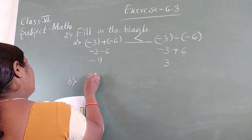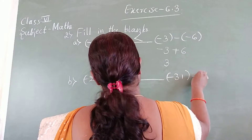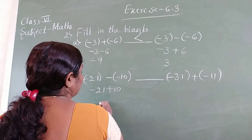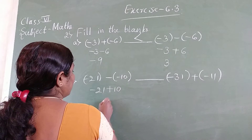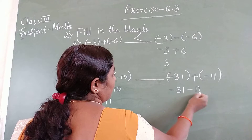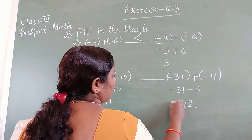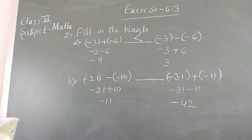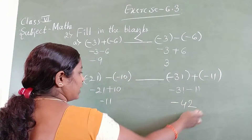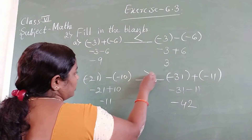Part B: minus 21 minus minus 10, dash, minus 31 plus minus 7. Minus 21 minus into minus gives plus 10, so minus 21 plus 10 equals minus 11. For the other side, minus 31 plus minus 7 — both minus, so add: minus 42. Larger negative numbers are always smaller than smaller negative numbers, so minus 11 is greater than minus 42.